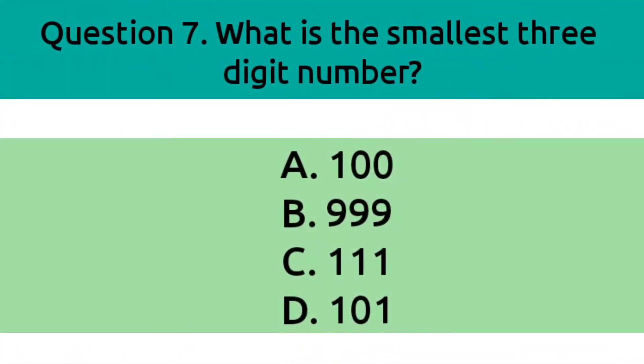Question 7. What is the smallest three digit number? Option A, 100. Option B, 999. Option C, 111. Option D, 101. And the correct answer is Option A, 100.